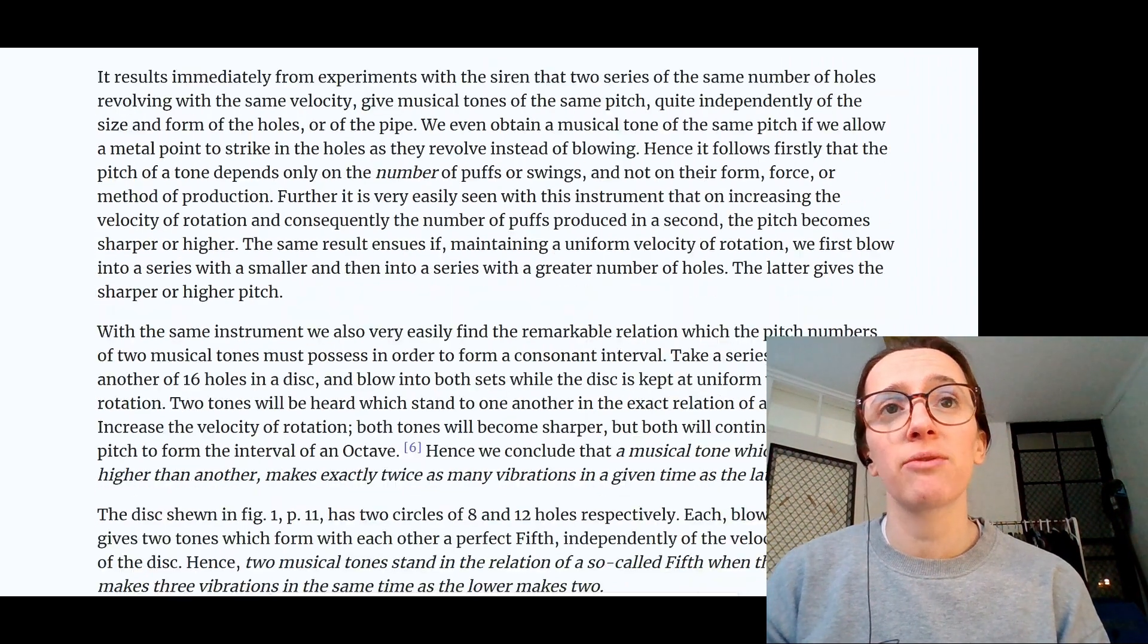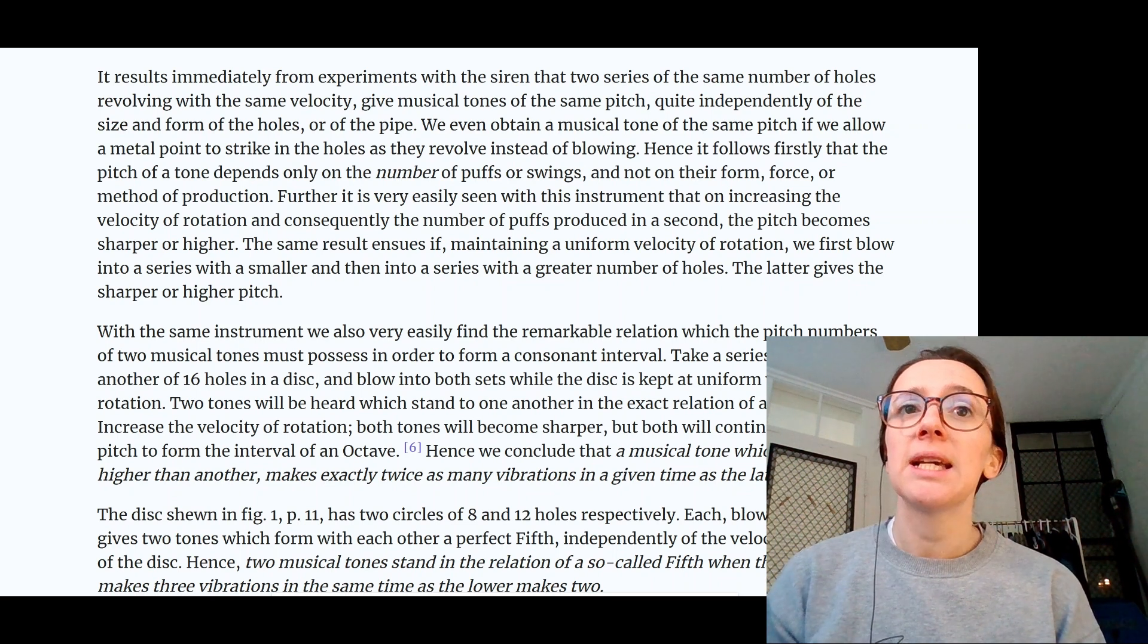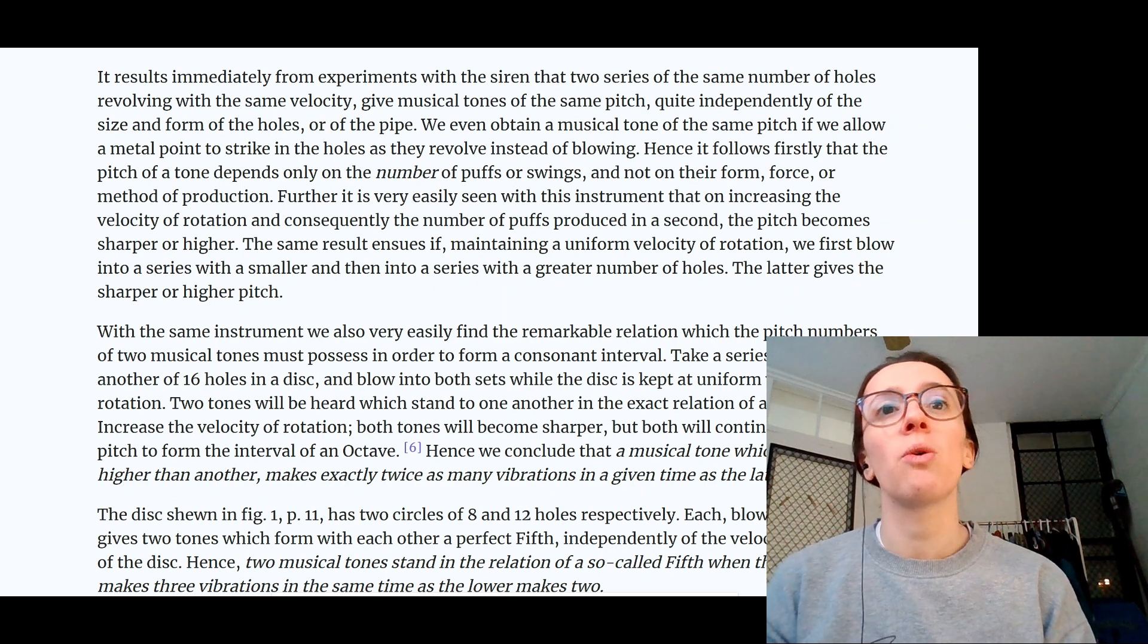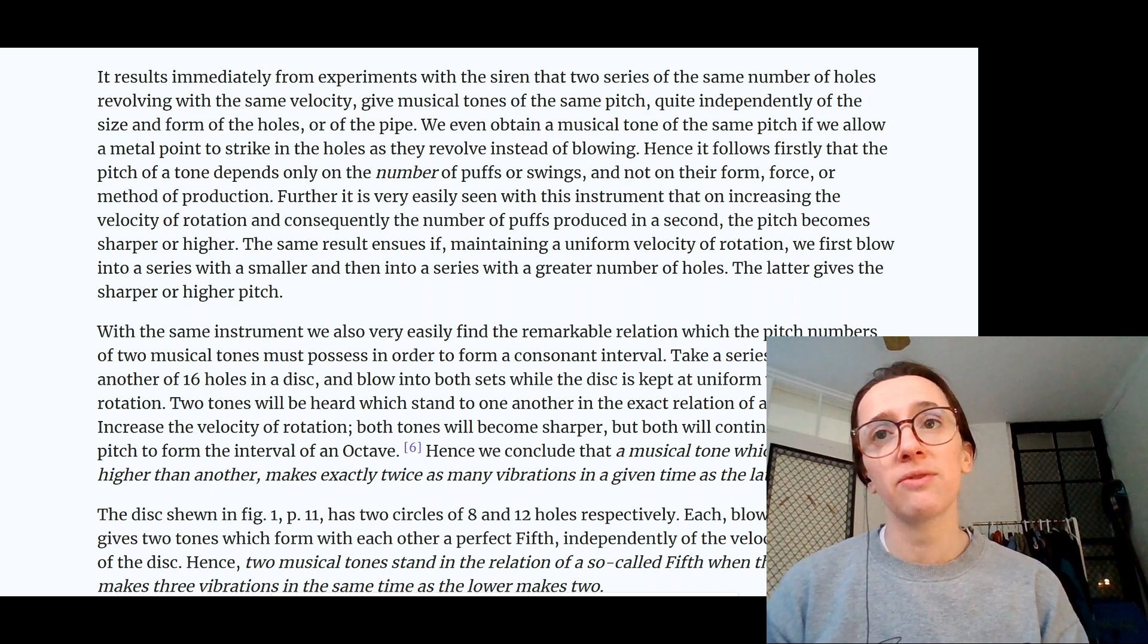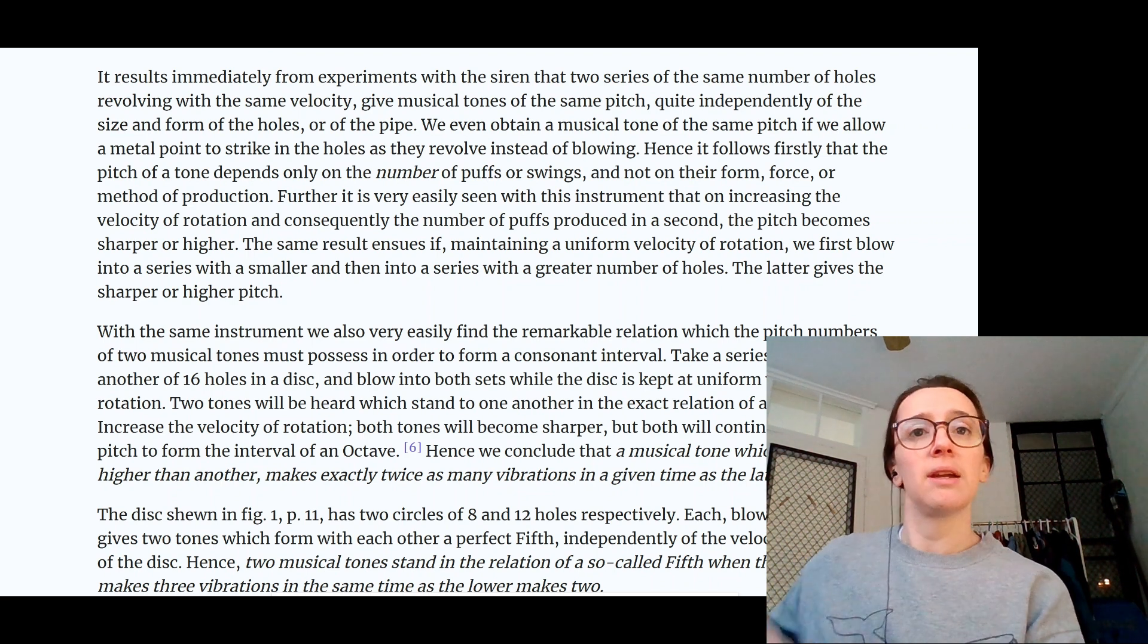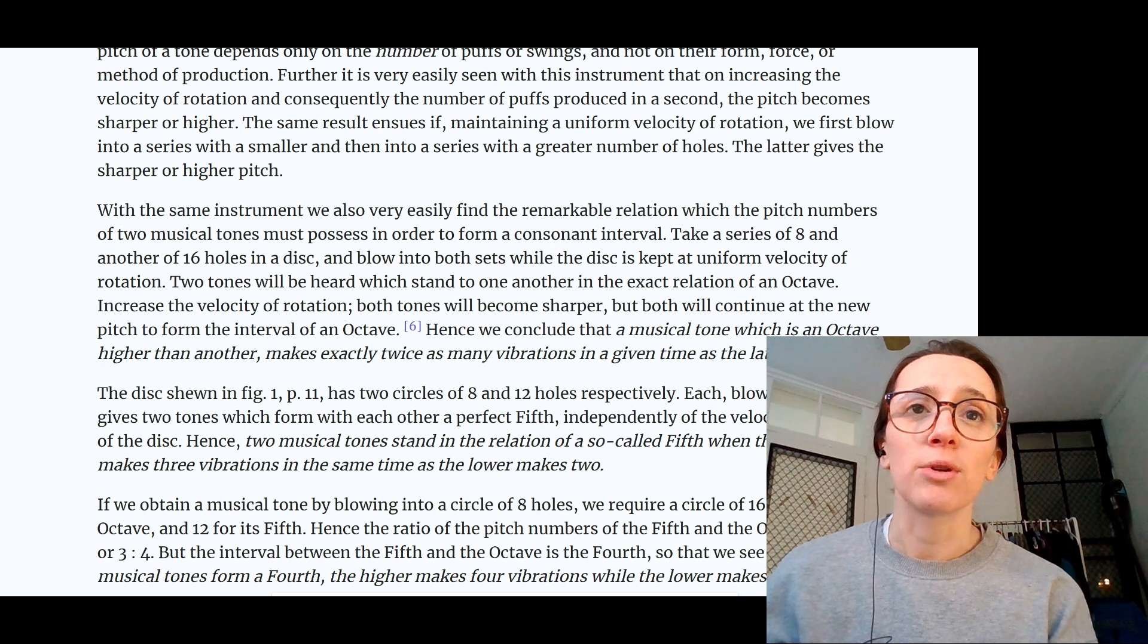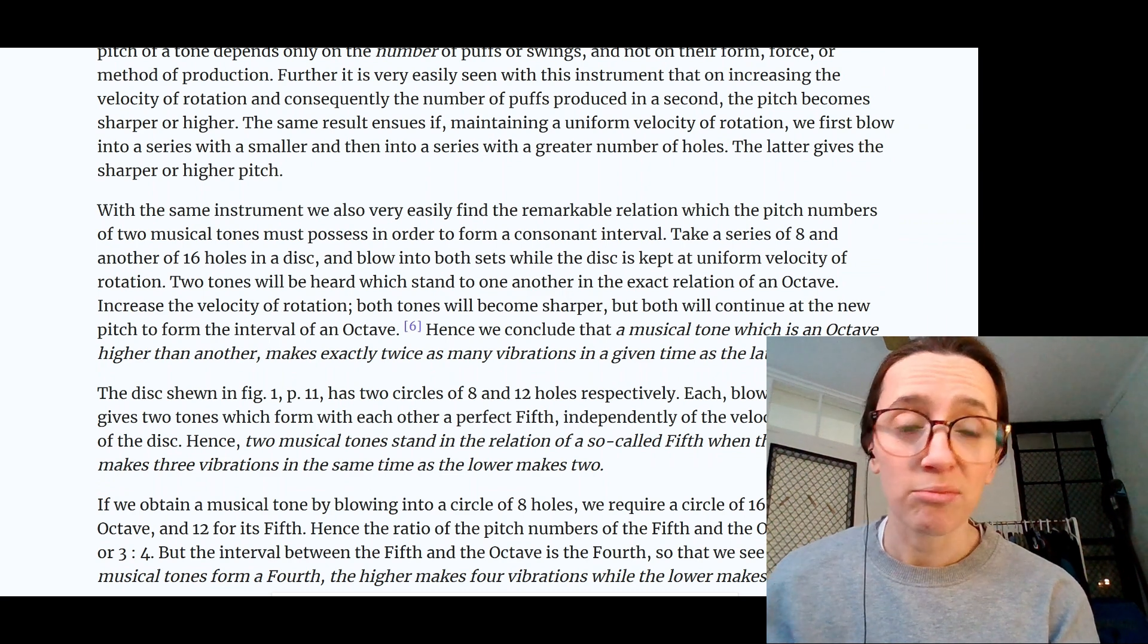It results immediately from experiments with the siren that two series of the same number of holes revolving with the same velocity give musical tones the same pitch, quite independently of the size and form of the holes or of the pipe. We even obtain a musical tone of the same pitch if we allow a metal point to strike in the holes as they revolve instead of blowing. Hence, it follows firstly that the pitch of a tone depends only on the number of puffs or swings and not on their form, force, or method of production. Further, it's very easily seen that increasing the velocity of rotation and consequently the number of puffs produced in a second makes the pitch higher or sharper.